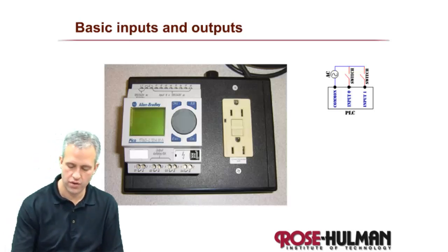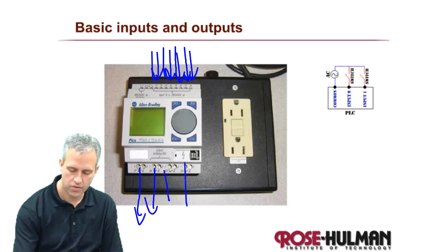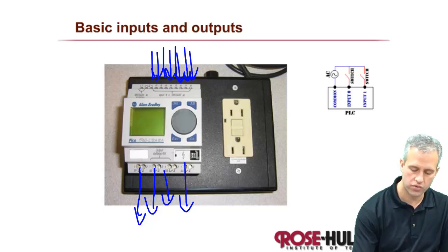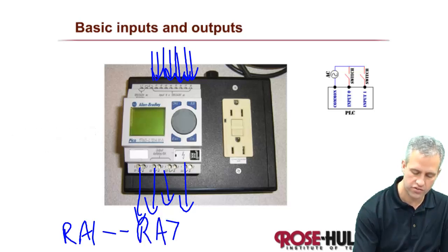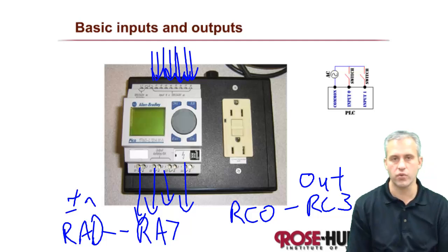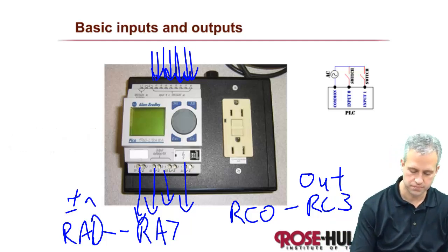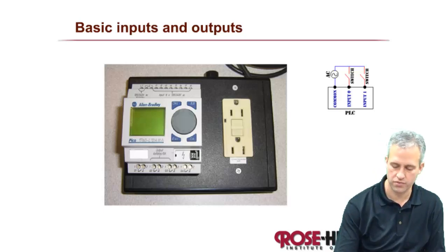Inputs and outputs on a PLC are typically simpler. This one has eight digital inputs and four outputs, and they're all AC voltages. To compare it to a PIC, think of it as having something like RA0 through RA7 as inputs and RC0 through RC3 as outputs — just four digital input pins and four digital output pins. It's a very simple system. Today we're mainly going to focus on those simple digital inputs and outputs.